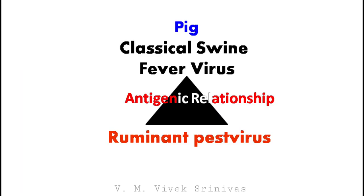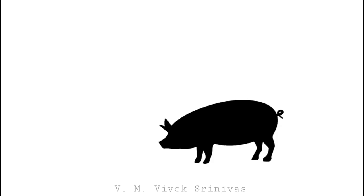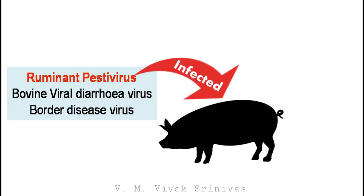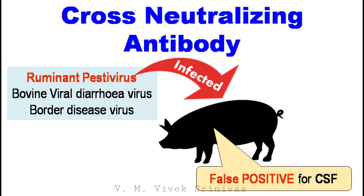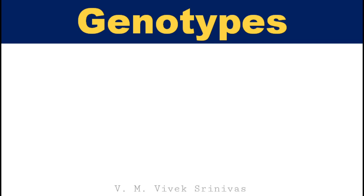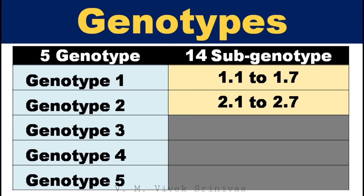This virus is antigenically closely related to other members of the genus Pestivirus, such as bovine viral diarrhea virus and border disease virus. So if a pig is exposed to ruminant pestivirus — that is bovine viral diarrhea virus or border disease virus — on laboratory diagnosis the test antibody will react to the antigen and show a false positive for classical swine fever virus. This is because of cross-neutralizing antibodies between these viruses. This virus is classified based on genetic variation into 5 genotypes, subclassified into 14 subgenotypes.